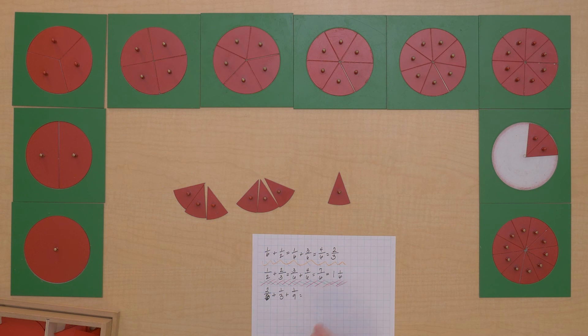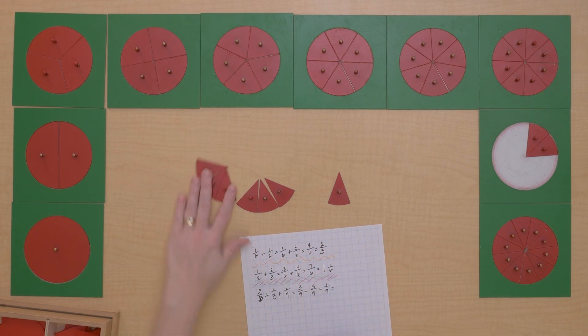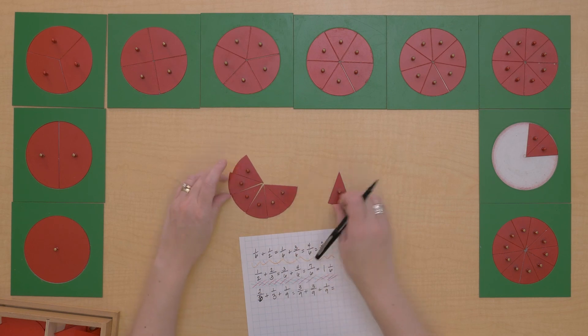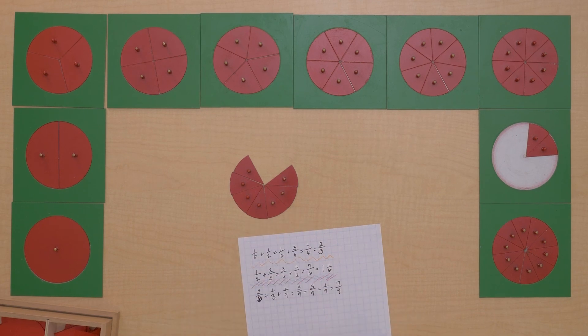Okay, so now we have three-ninths plus three-ninths plus one-ninth, which gives us seven-ninths.